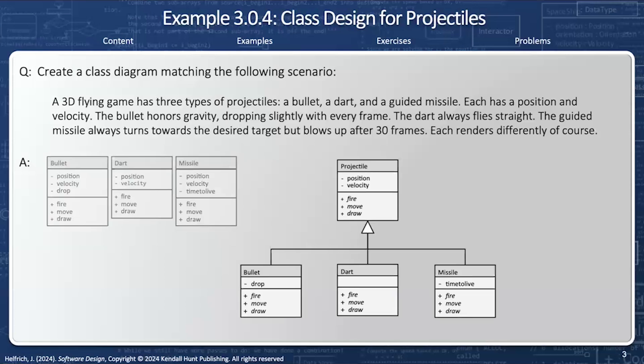And so from this, we can say the projectile is the base class. Position and velocity are going to be my shared attributes, and my fire, move, and draw are all going to be virtual functions.